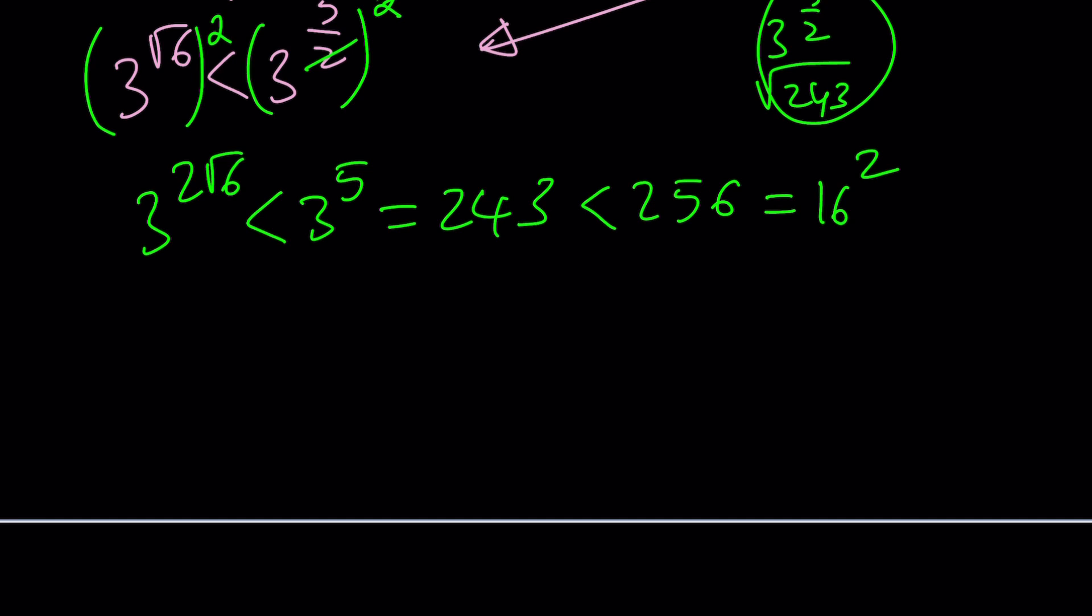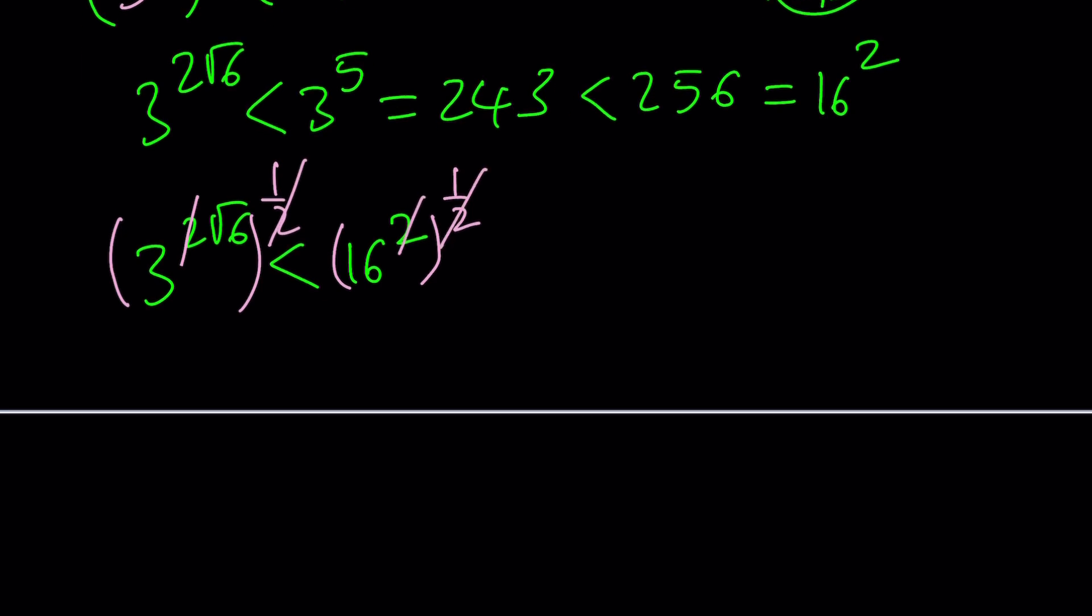we have this equation, which is 3 to the power 2 root 6 is less than—let me rewrite—3 to the power 2 root 6 is less than 16 squared. Okay. Well, maybe I squared both sides, but then I'm going to square root both sides. In other words, we're going to raise both sides to power 1 half. We're going back and forth to make it a little easier on ourselves. So from here we get 3 to the power root 6 is less than 16. Great. That was the goal. I was trying to compare a very irrational number to an integer and I got it.